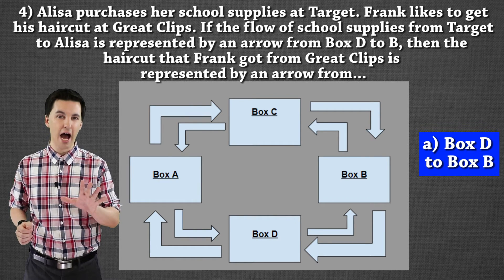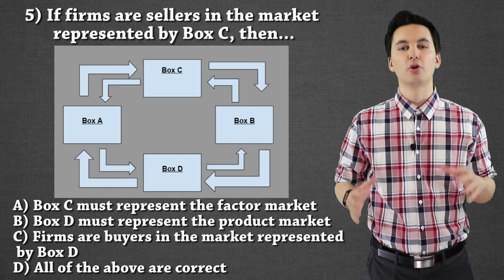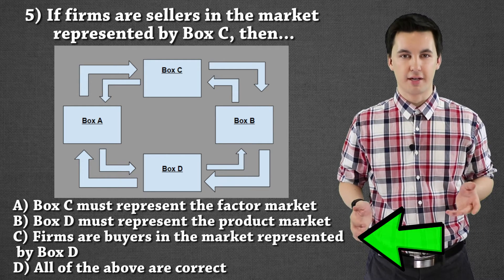Question number five. Due to some technical issues I lost part of the video, so I'm going to narrate this part of question five. For question five, if businesses or firms are sellers in the markets represented by box C, then what? Take a second and pause the video. We have some multiple choice here, so try to figure it out. If you put C, you're correct. But the question is, why are you correct? It's not important that you got the right answer — it's important that you understand how to get the right answer.